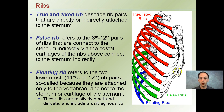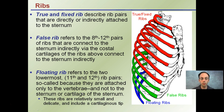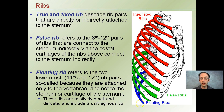The last classification, the floating ribs, shown in blue, refers to the lowermost ribs — 11 and 12. These are so-called floating because they attach only to the vertebrae in the back. They do not have a direct connection to the sternum or cartilage of the sternum. These ribs are relatively small and delicate, and they include a little cartilage at the very tip of them.